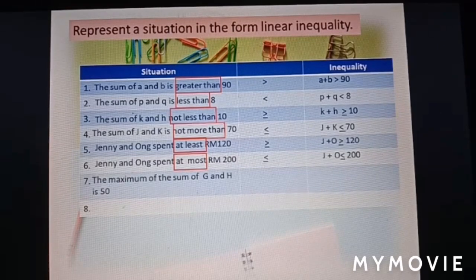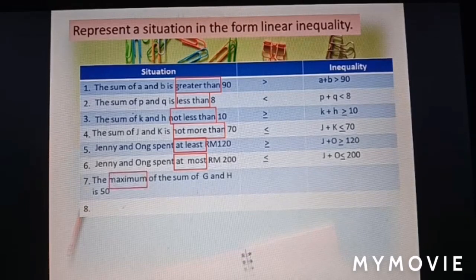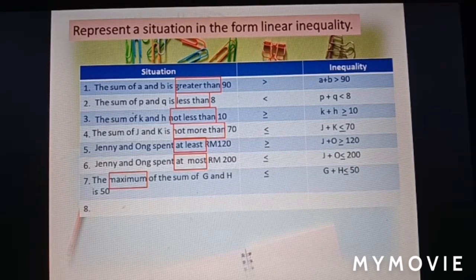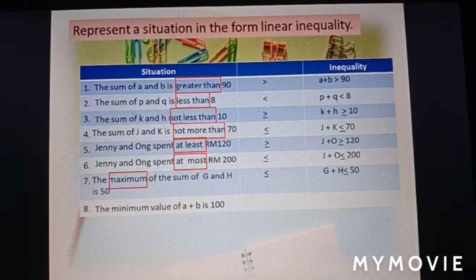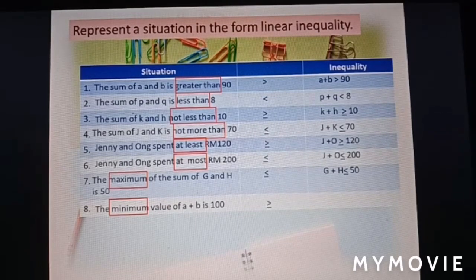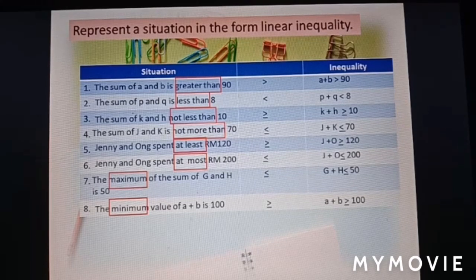The maximum of the sum of g and h is 50. 'Maximum' has the same meaning as 'at most,' so the inequality is: g plus h ≤ 50. The minimum value of A plus B is 100. 'Minimum' has the same meaning as 'at least,' so the value can be 100 or more than 100: A plus B ≥ 100.